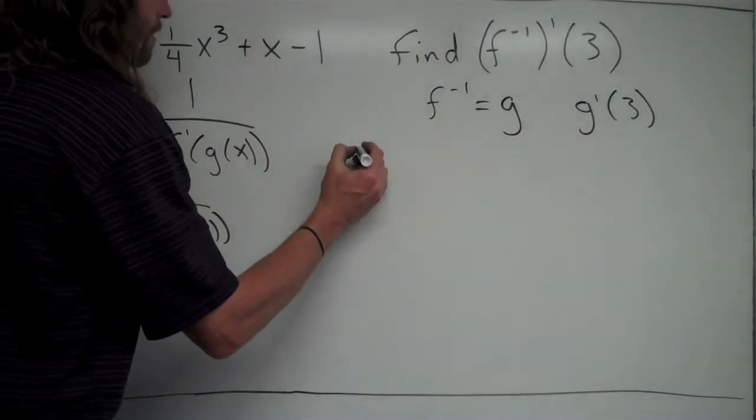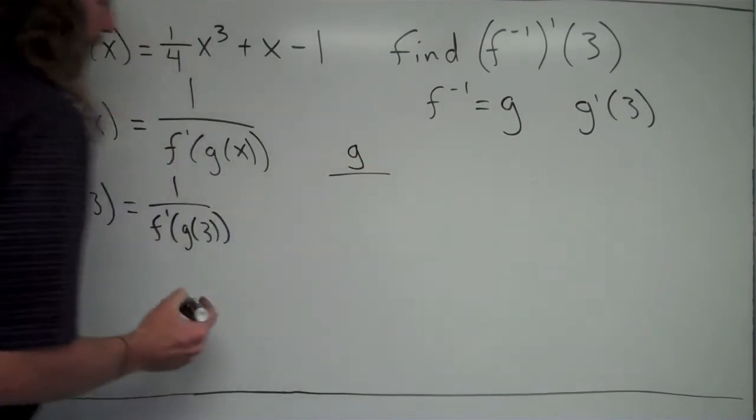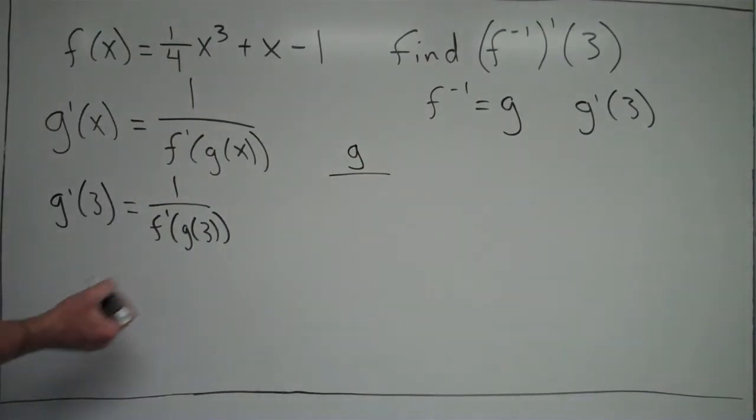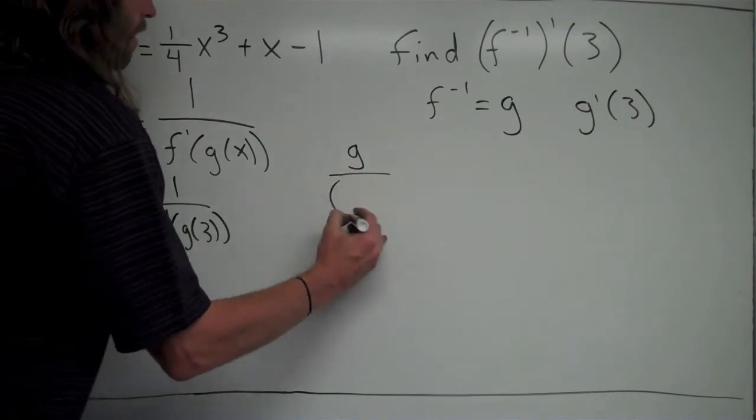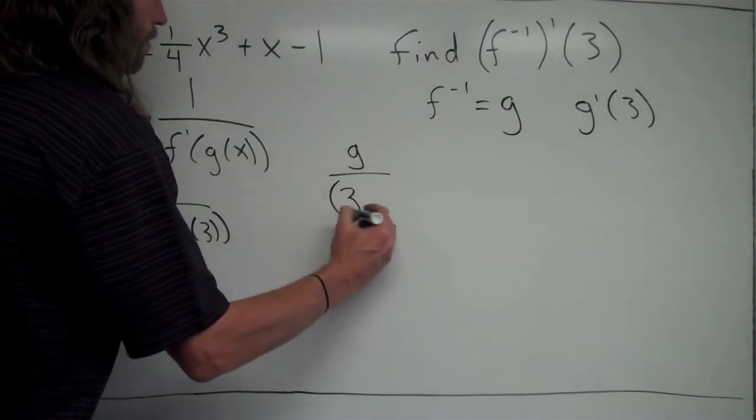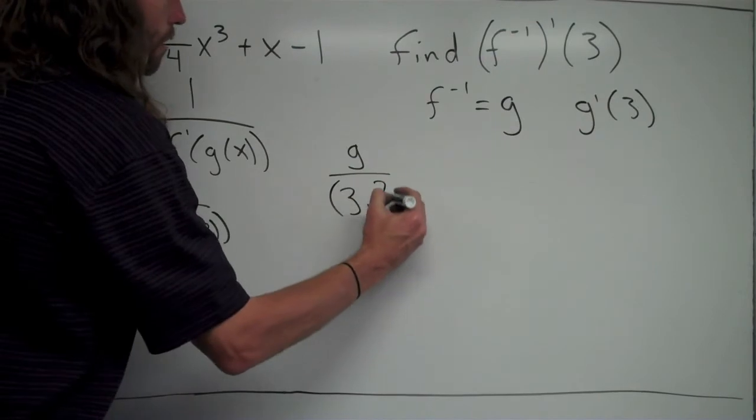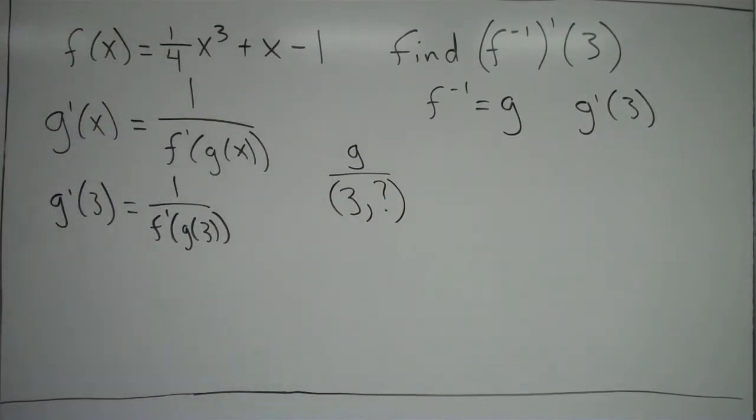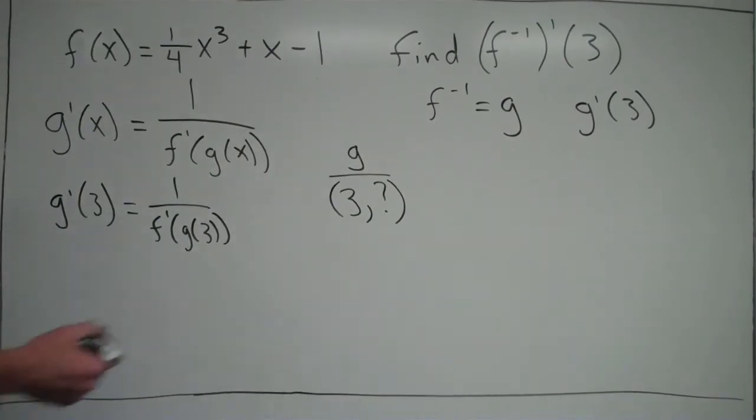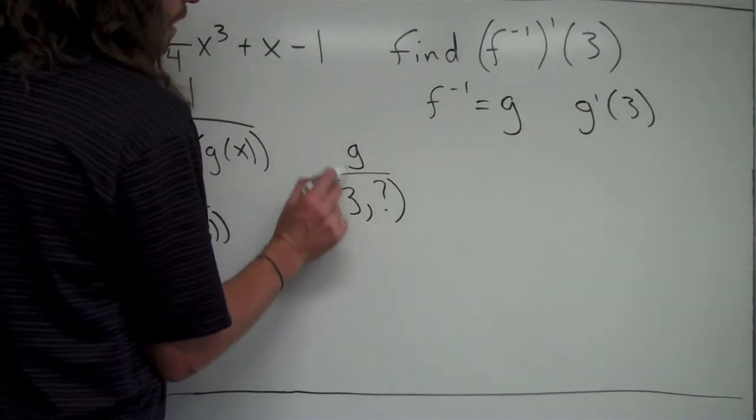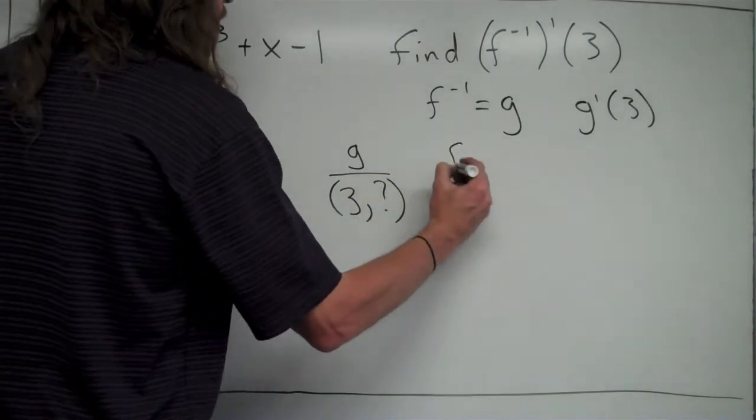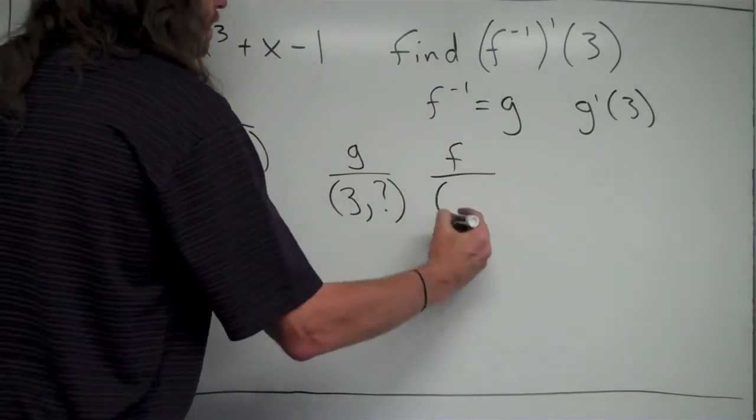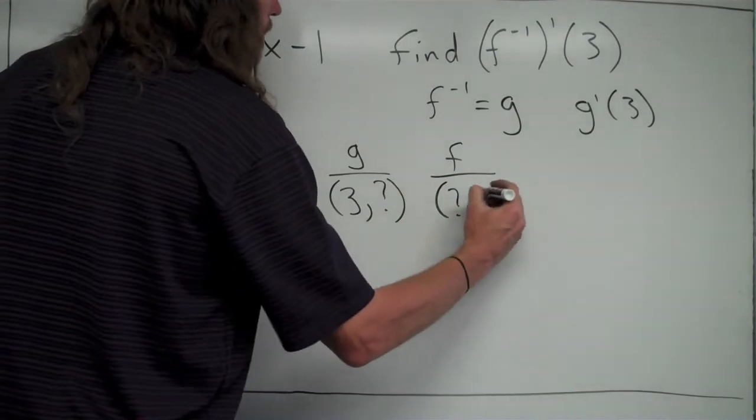For example, on the graph of g, we have this 3 referring to an x-coordinate. And g of 3, what we're trying to find is the y-coordinate at x equals 3 on this graph of g. So on the graph of g, there's this point 3 comma question mark because we don't know what the y value is. That's what we're looking to find. So that means if that point is on the graph of g, we know that on the graph of f is the opposite point, question mark comma 3.